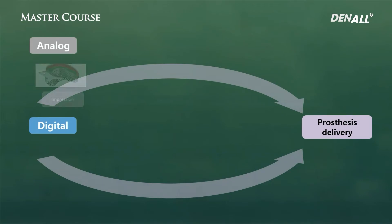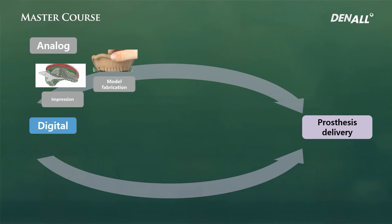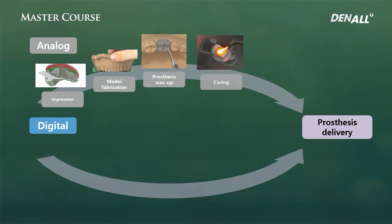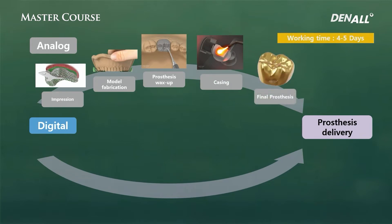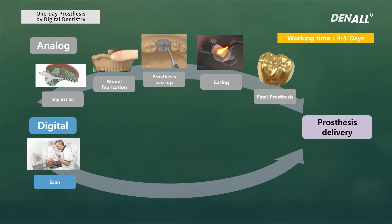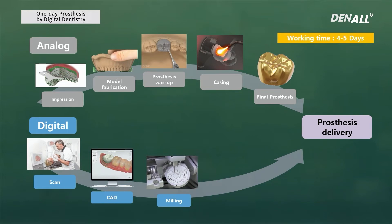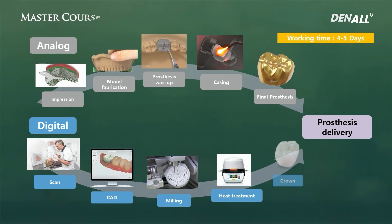When I provided prosthesis using analog methods, I would take an impression, make a model, do wax-up and casting, and the prosthesis would be fabricated and delivered — taking about four to five days. But now, using digital dentistry, the process has changed: I scan, design, and mill, do heat treatment, and deliver the final prosthesis up to try-in. If I do it really quickly, this can be done within a day.